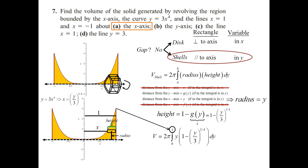Because of this function x = (y/3)^(1/4), this tends to not be the preferred approach. The disk was a whole lot easier. Generally, when you're choosing between disk and shells, you want to choose disk. There are some instances where you'd prefer shells, but for the most part, it's going to be a disk if you have no gap between your region and your axis.